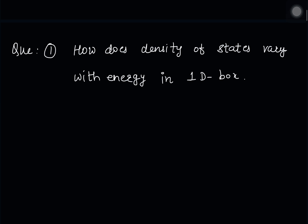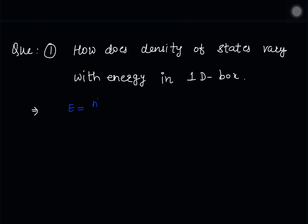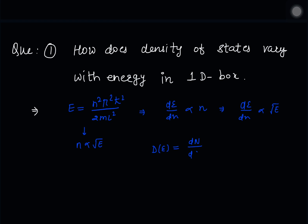The first question is: how does density of states vary with energy? We know that in a 1D box, the energy formula is n²π²ℏ² divided by 2mL². So dE/dN is proportional to n, and n is proportional to √E. Therefore dE/dN ∝ √E. Density of states means number of energy levels per unit energy, dN/dE, so it will be proportional to 1/√E. This will be the answer.